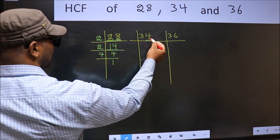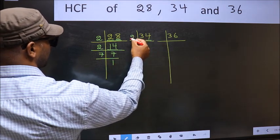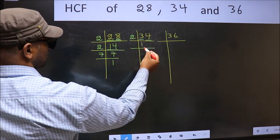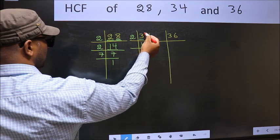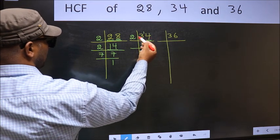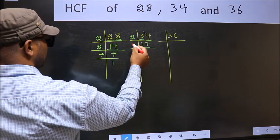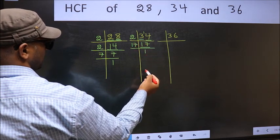Now the other number, last digit 4 is even, so take 2. First number 3, a number close to 3 in 2 table is 2, 1, 2. 3 minus 2 is 1, carried forward 14. When do we get 14 in 2 table? 2, 7 is 14. Now 17 is a prime number, so 17, 1, 17.